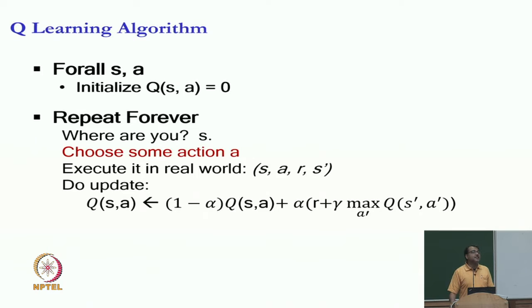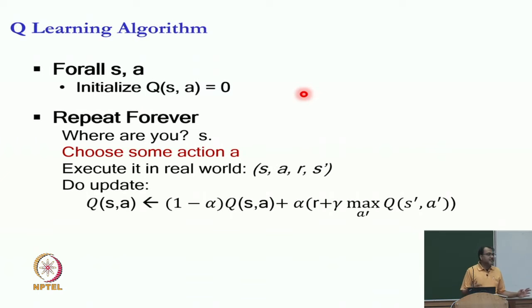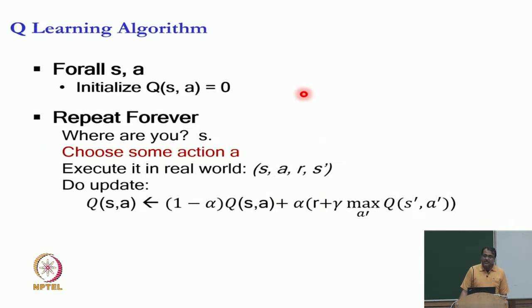In the last class we talked about Q-Learning. Q-Learning is a simple algorithm where we maintain for each state the value of each action as we gather experience by performing actions in the environment. The template algorithm initializes Q values to 0 and then repeats forever: it checks which state S it is in, chooses action A, and executes A in state S, reaching state S-prime and getting immediate reward R.